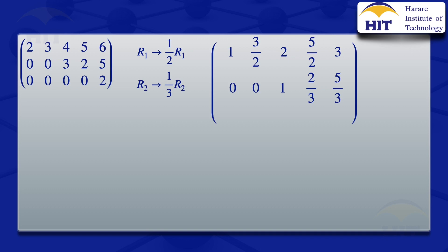We now move on to the third row. The distinguished element there is 2, and to get a 1 we divide that row by 2. So we transform R3 → (1/2)R3, dividing each element by 2. We get: 0/2 = 0, 0/2 = 0, 0/2 = 0, 0/2 = 0, and lastly 2/2 = 1.